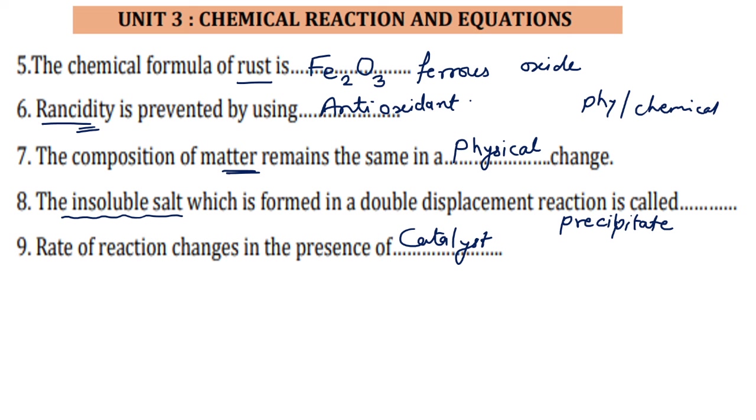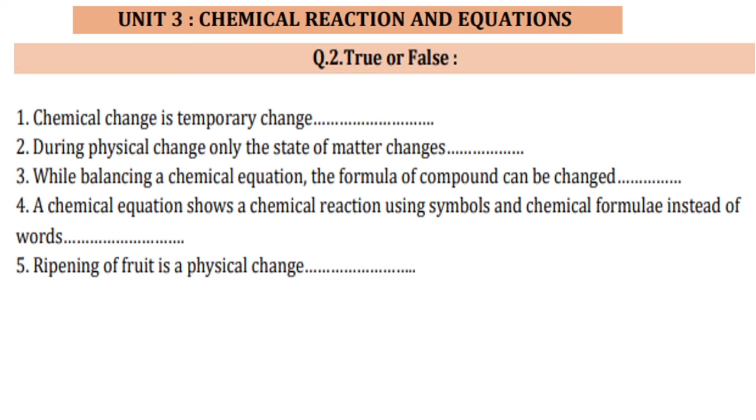Question number: True or false. Chemical change is temporary change. This is false because temporary change is physical. Permanent change is the true answer. During physical change only the state of matter changes. Yes it is correct. While balancing a chemical equation the formula of compound can be changed. It is false because you cannot change the formula of compound.